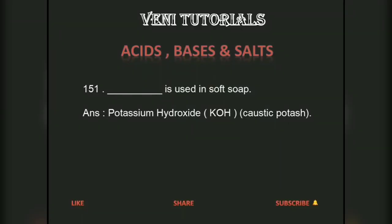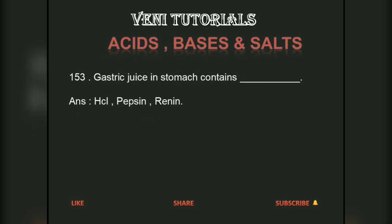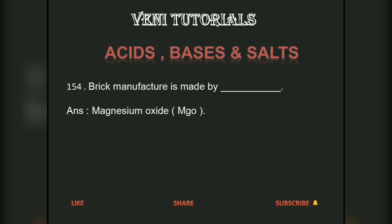Dash is used in soft soap — answer: potassium hydroxide (KOH), also known as caustic potash. Chemical formula of soap is dash — answer: C17H35COONa. Gastric juice in the stomach contains dash — answer: HCl, pepsin, and renin.